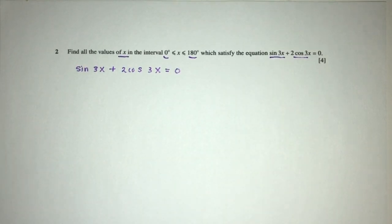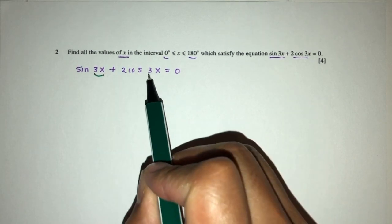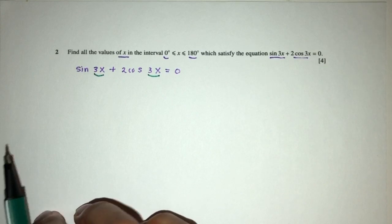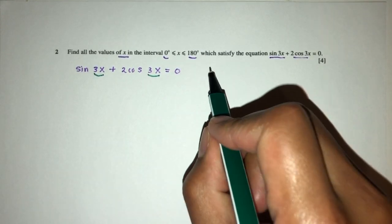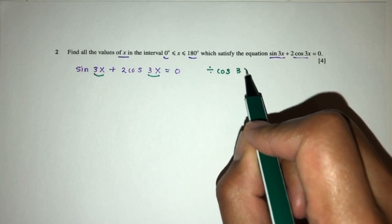Now, as always, whenever we have sine x or cos x, because the angle here is the same, 3x and 3x, whenever we have cos and sine in the same equation, we divide by cos. So here we have 3x, so that will be cos 3x.